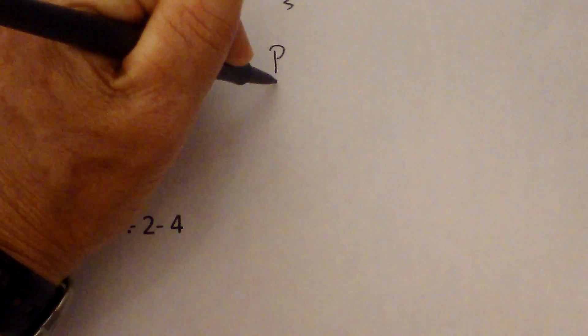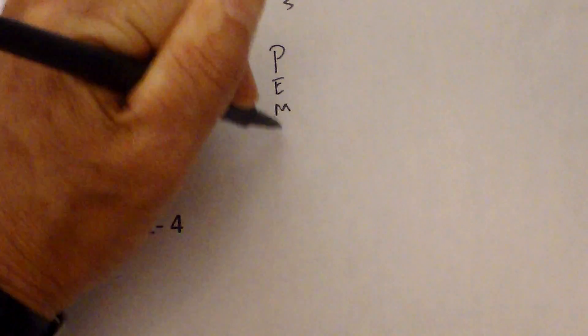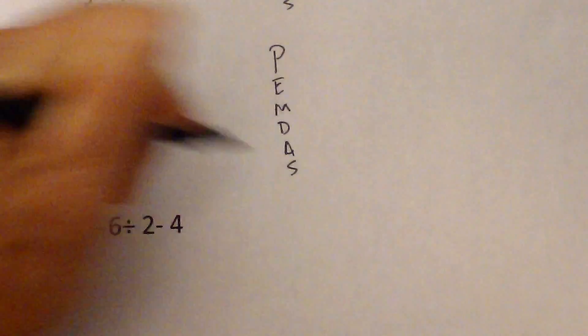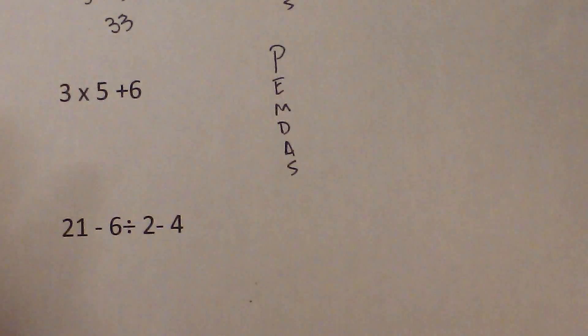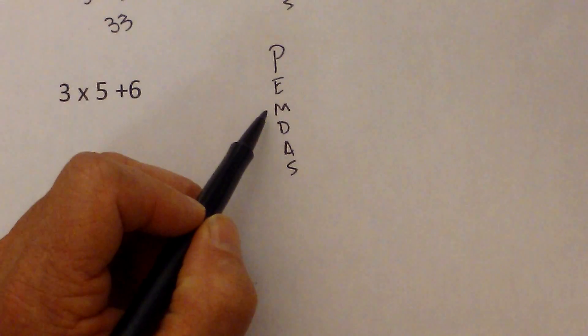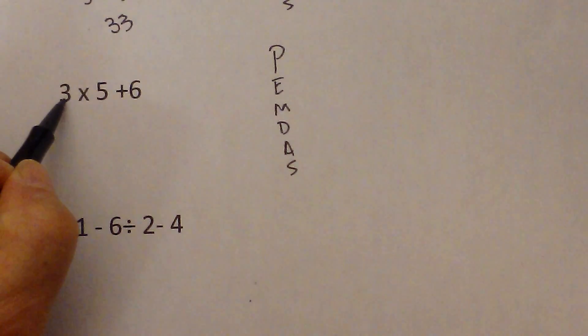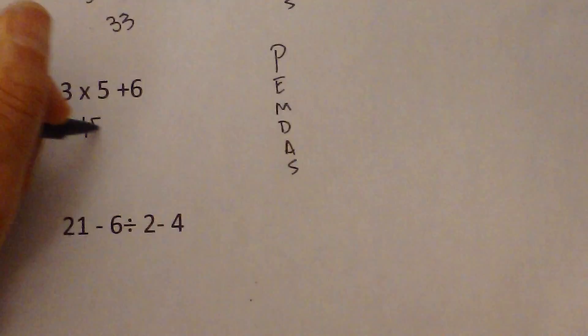I'm going to go ahead and write down PEMDAS, and I just think that it's a nice check. It's a way to not get as confused. Parentheses? No. Exponents? No. Multiplication? Yes. So I'm going to go 3 times 5 which is 15.